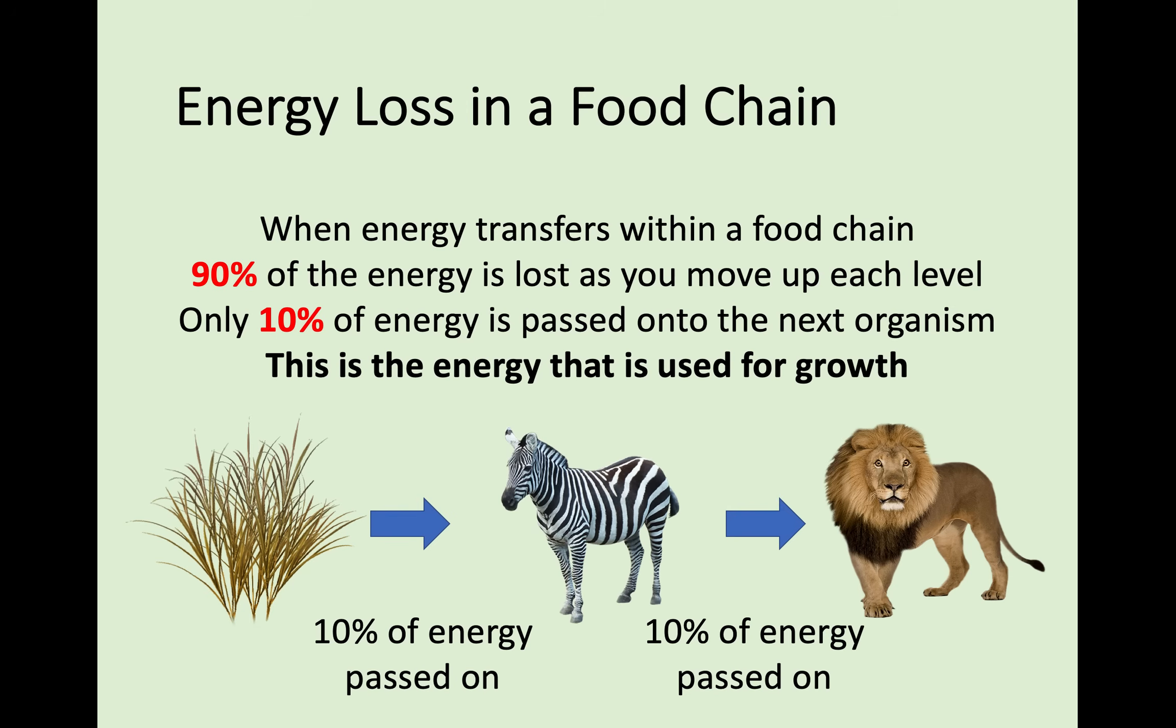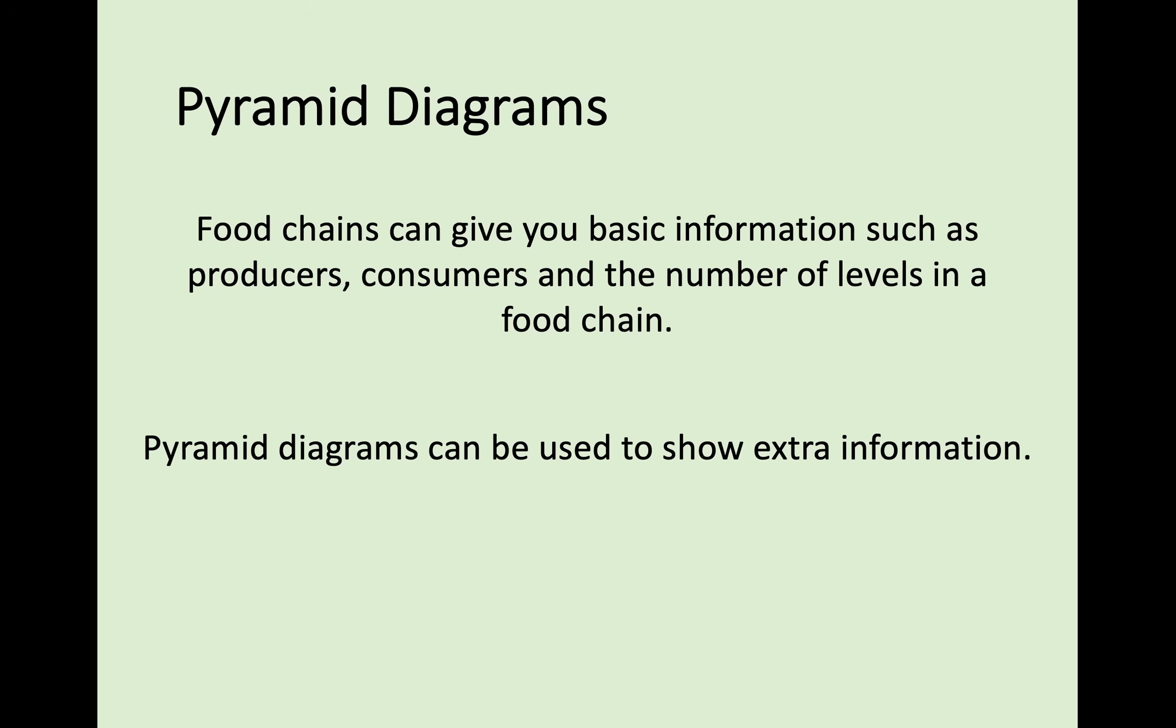What we're going to look at is how to actually show this loss of energy, the amount of energy being passed on to each level, instead of looking at food chains. To do that, we're going to be looking at something called pyramid diagrams. Food chains are really useful for seeing information such as producers, consumers, the number of levels in a food chain, and the interaction between different organisms. But pyramid diagrams are good at showing the energy that is being passed between each level. We're going to look at two different pyramid diagrams: a pyramid of numbers and a pyramid of energy. They both work in a very similar way.